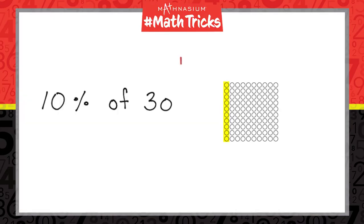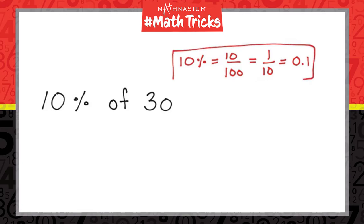Recall that 10% means 10 for each 100, 10 out of 100, or 10 100ths. We can divide 10 by 100 to convert 10% to a decimal, and 10% is equal to 1 tenth.